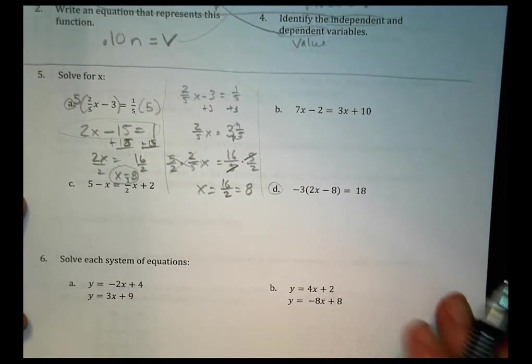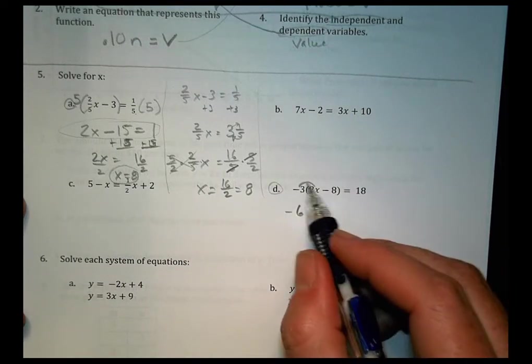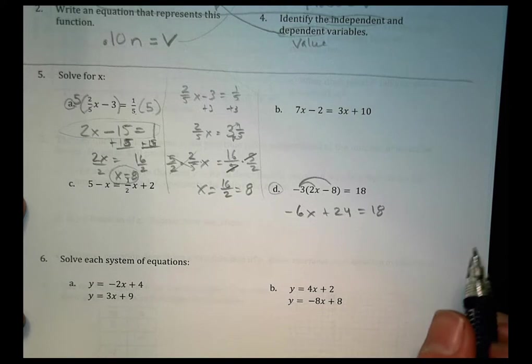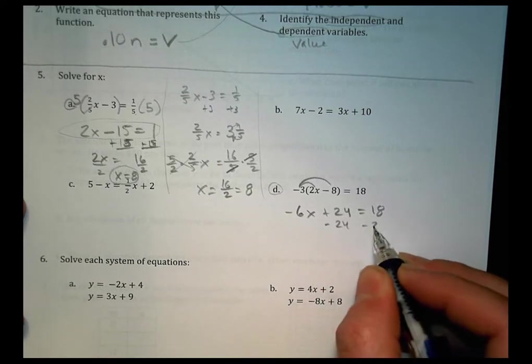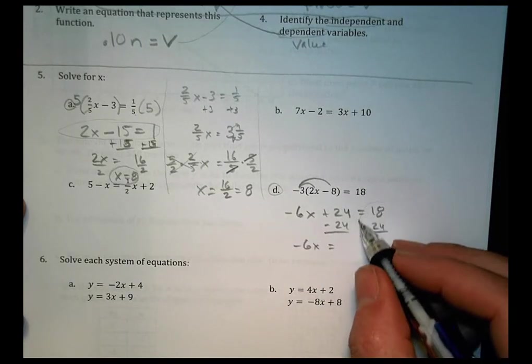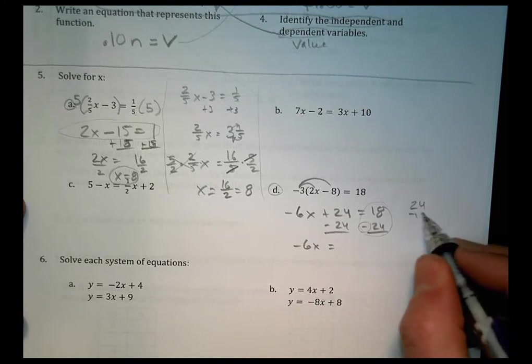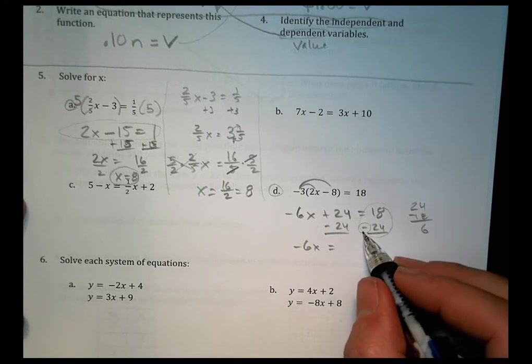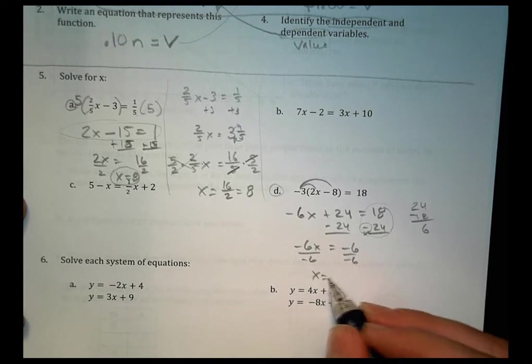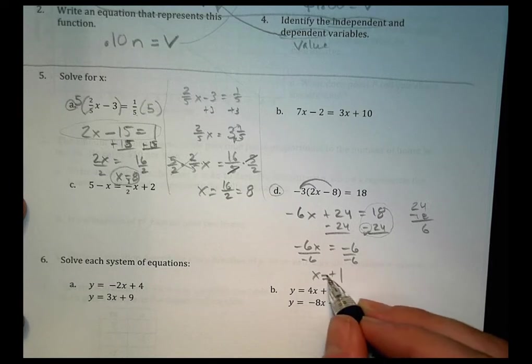Let's look at letter D. We're going to distribute here. Negative 3 times 2x becomes a negative 6x. Negative 3 times negative 8 becomes a positive 24, and that's still equal to 18. So let's subtract 24 from both sides. We have a negative 6x equals, we have two different signs, so we're going to find the difference and keep the sign of the larger absolute value. So 24 minus 18 is 6, but it's going to be negative 6. We're going to divide both sides by negative 6. So x equals, negative divide by negative is a positive, and 6 divided by 6 is 1. So x simply equals 1.